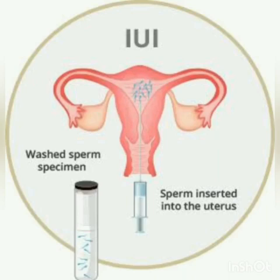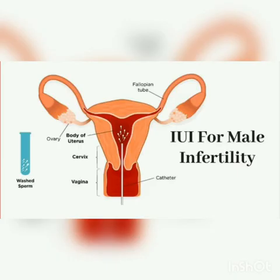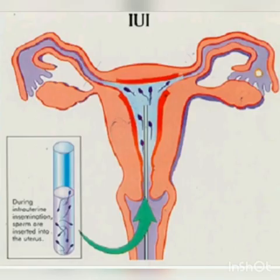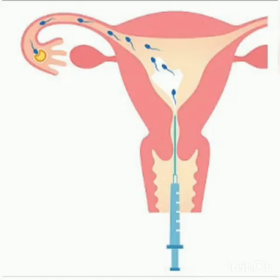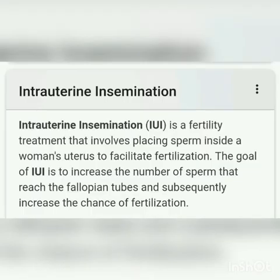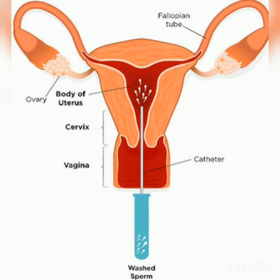The first procedure is intrauterine insemination. This procedure is used to treat infertile men with low sperm count. The semen — which is a group of sperms — is collected either from the husband or from a healthy donor, and introduced into the uterus through the vagina by a catheter, which is a wire that transports the sperms. After stimulating the ovaries to produce more ova, the sperms swim towards the fallopian tube to fertilize the egg, resulting in a normal pregnancy.